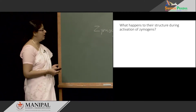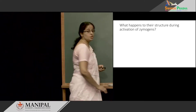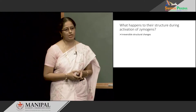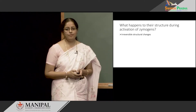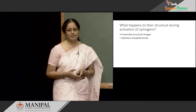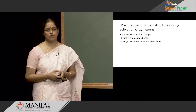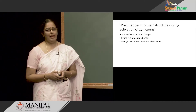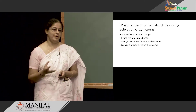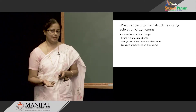Now let us see what happens to the structure of Zymogens as they get activated to their active form. When Zymogens get activated, they undergo irreversible structural change. That involves hydrolysis of peptide bonds, which results in release of short peptides, and also a change in the overall three-dimensional structure of the molecule. This brings the active site of the enzyme to its surface, making the active enzyme truly active.